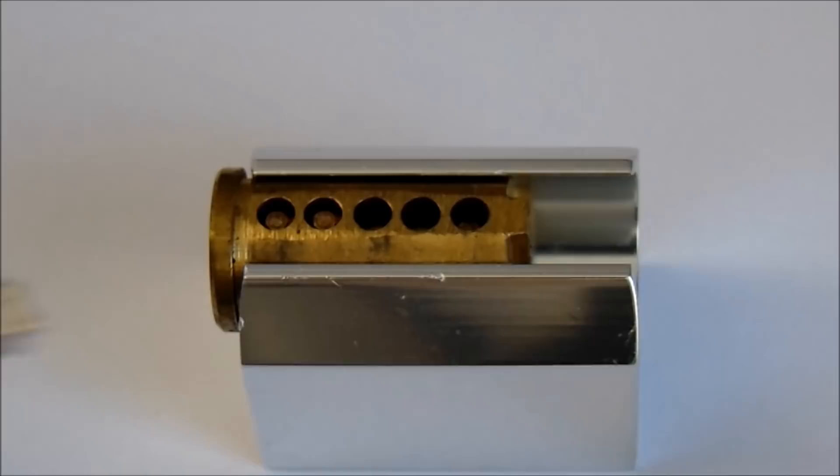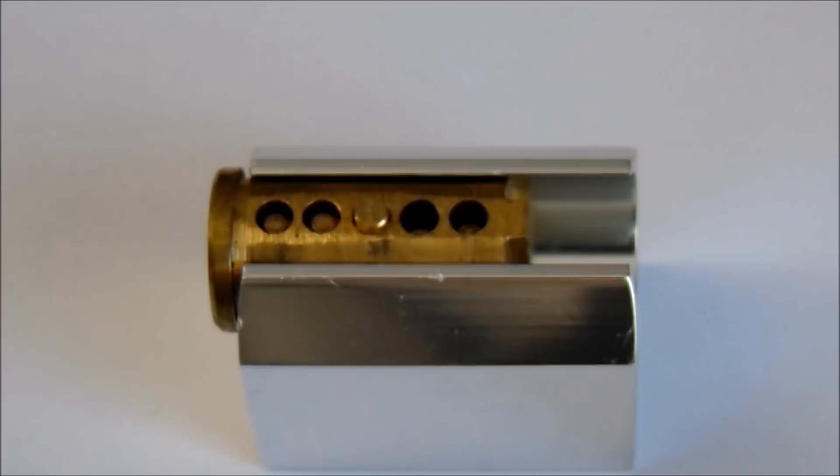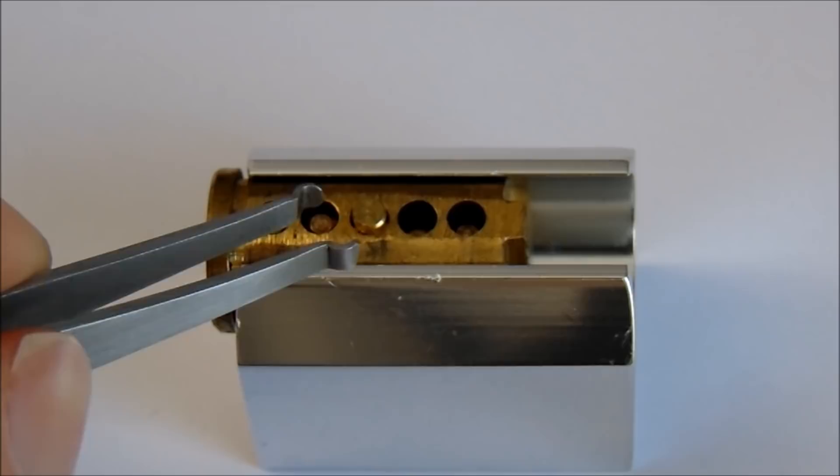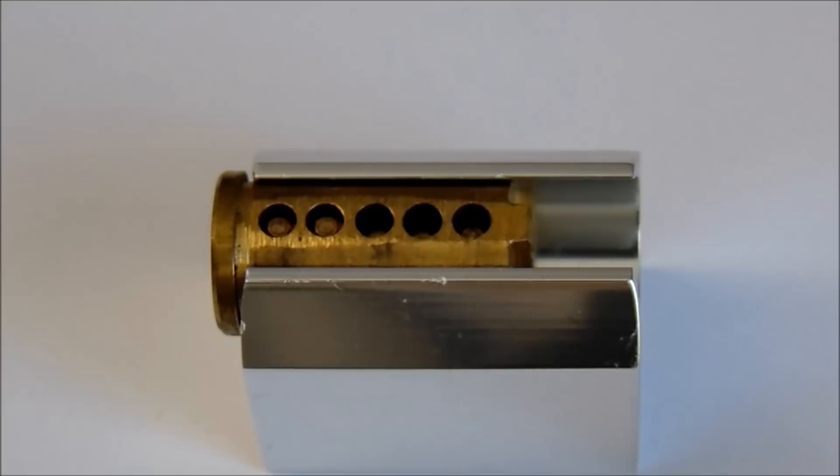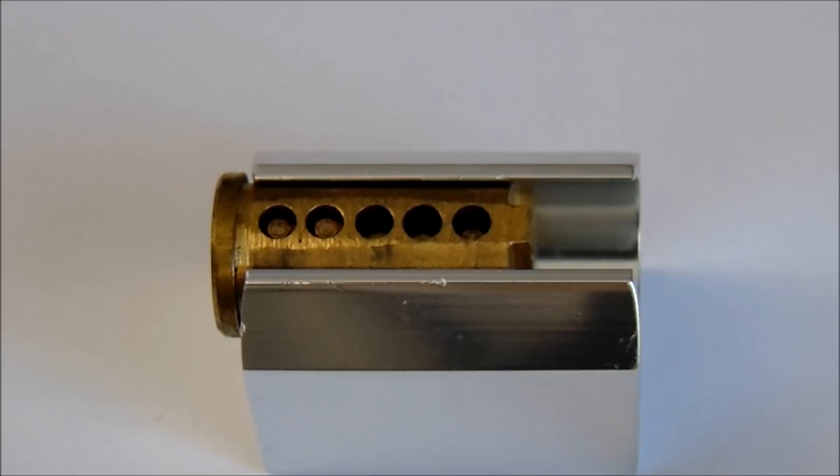What happens is the spool pin is still sitting here in the plug and it is obstructing plug rotation. What you need to do is set that pin and be able to have all the pins set at the shear line and then the lock will open. We're going to go over some more details on how to get through a false set in just a moment.